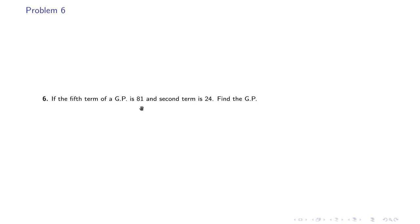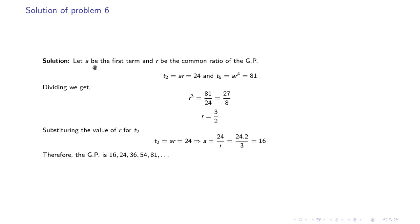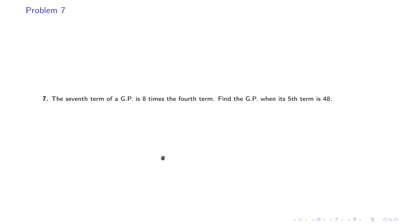The sixth problem: if the fifth term of a GP is 81 and the second term is 24, find the GP. Let a be the first term and r the common ratio. Given ar = 24 and ar^4 = 81. Dividing gives r³ = 81/24 = 27/8, so r = 3/2. Substituting back, a = 24/r = 24 × 2/3 = 16. Therefore the GP is 16, 24, 36, 54, 81.